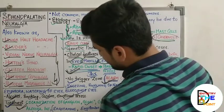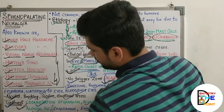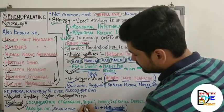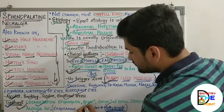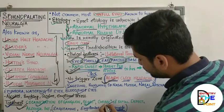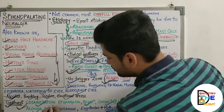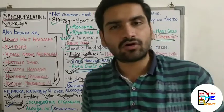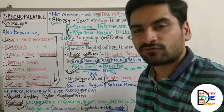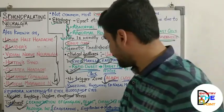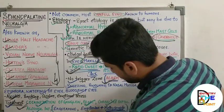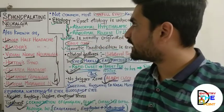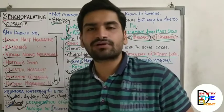Treatment options for sphenopalatine neuralgia include cocainization or alcohol injection into the sphenopalatine ganglion, resection of the ganglion, and correction of septal defects. Drug options include ergotamine alone to reduce onset of painful symptoms. If ergotamine is not helpful, a combination of ergotamine with methysergide can be used, which will definitely reduce the pain.